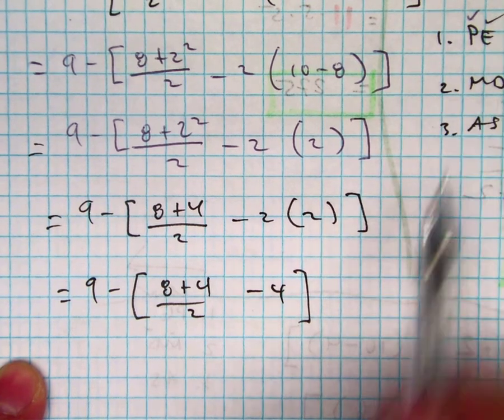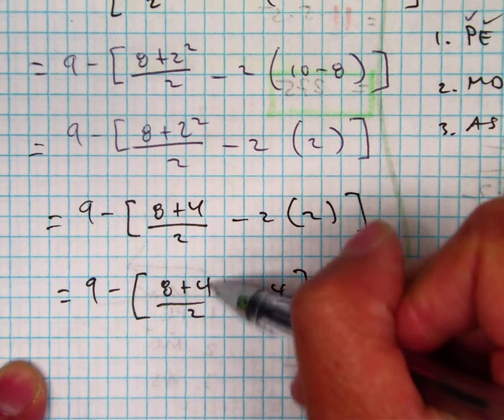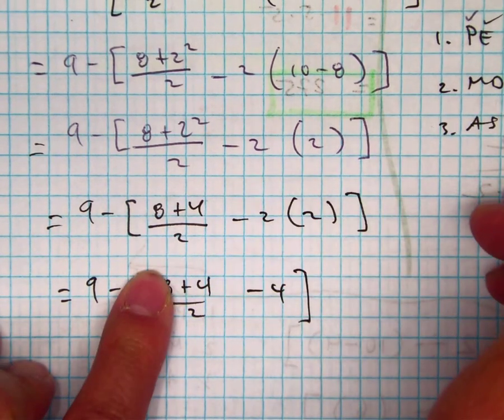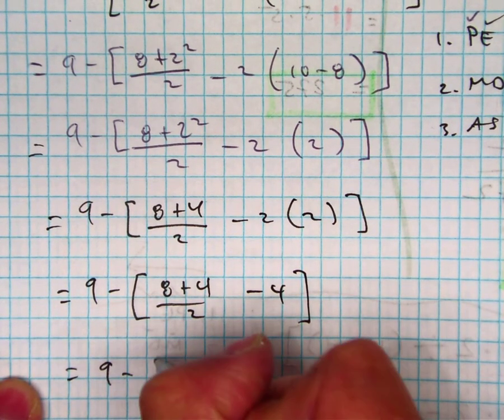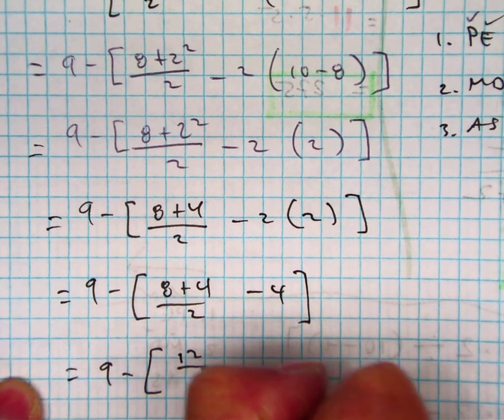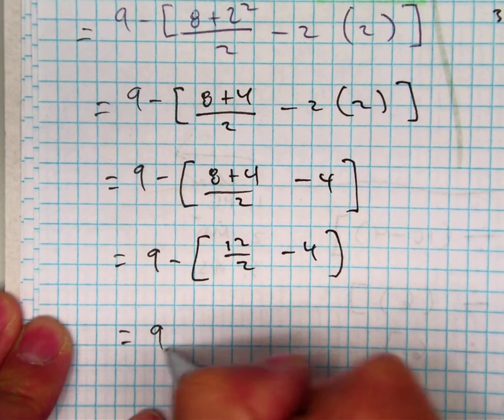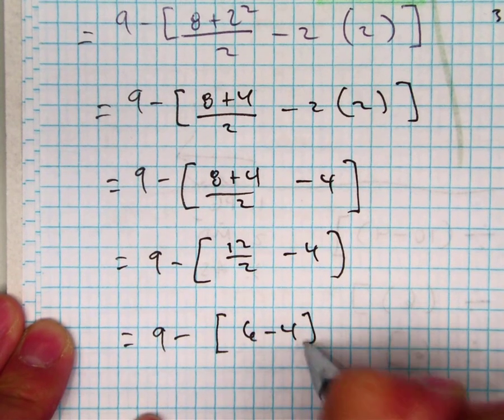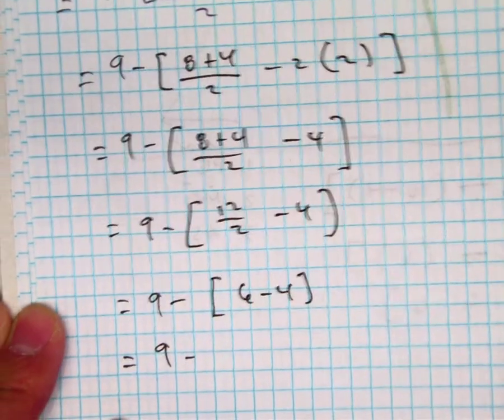And then within this, I'm still doing any multiplication, division. Now here, you can essentially do 8 divided by 2 and 4 divided by 2, or you can just do 8 plus 4, which gives me 12 divided by 2. And 12 divided by 2 is 6. So I have 6 minus 4. And what is 6 minus 4? Which is 2.